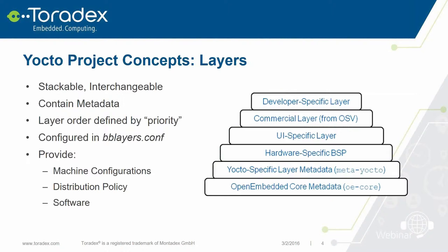I only briefly discussed layers in part one, so I'm going to discuss them in a bit more detail now. Layers are designed to stack and are in a general sense interchangeable, although not universally so, as some layers have dependencies on other layers. They contain metadata such as configuration files, classes, and recipes. Layer order and precedence is defined by a property called priority. Layer inclusion into the build system is configured in the bblayers.conf file. Layers provide machine configurations, distribution policy, and software, and are logically divided based on their purpose.